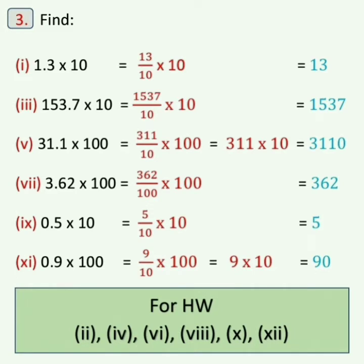Sum number 3, find. First one: 1.3 into 10. We can write 1.3 as 13 upon 10, so 13 upon 10 into 10. Now cancel 10 from numerator as well as from denominator, and we will get the answer as 13.